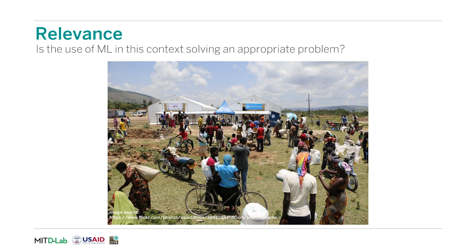For an example of relevance, let us consider the tracking of human assistance delivery. Organizations may want to create systems to monitor people in refugee camps and make sure they are only getting the food or other supplies that they are entitled to. However, the major losses often happen further upstream, such as people diverting whole trucks full of supplies, not individuals taking two bags of rice instead of one. An AI solution to keep a closer eye on individual aid recipients would fail the relevancy test because it is not addressing a major issue in the system.